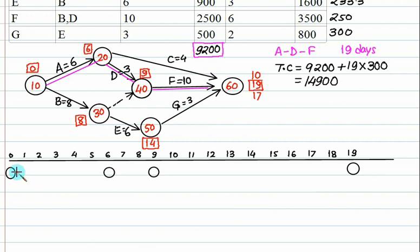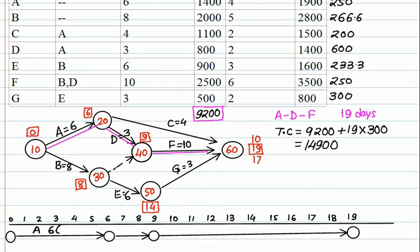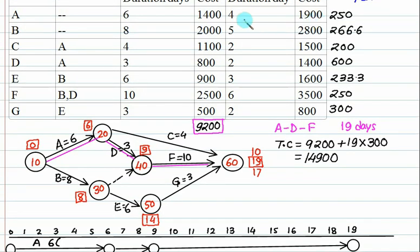This is your critical path. Activity A takes 6 days and its crash duration is 4 days. Activity D normally requires 3 days but if you crash it you can complete it in 2 days. Activity F will take 10 days but if you crash F you can finish it in 6 days.